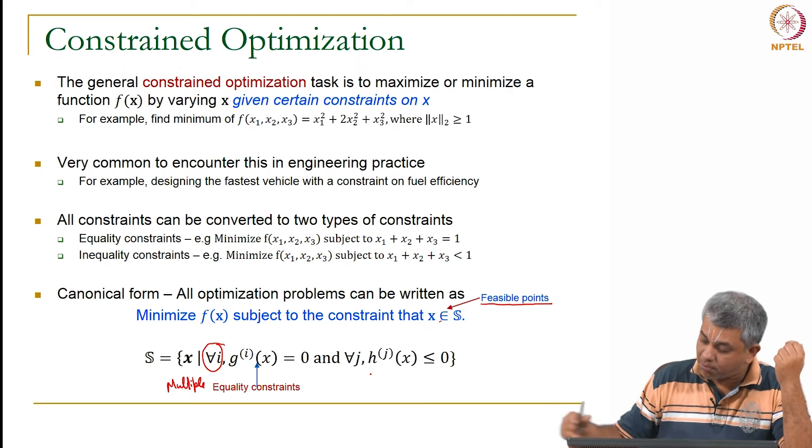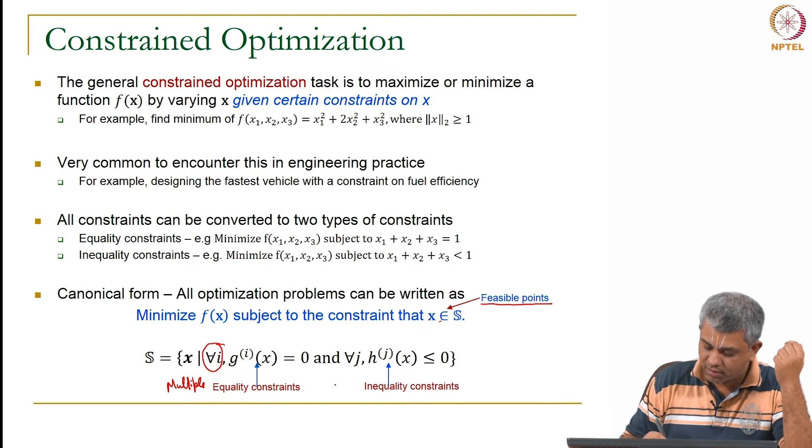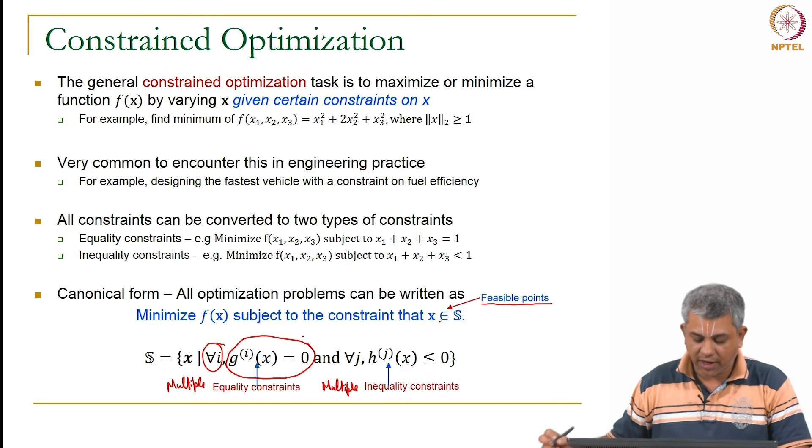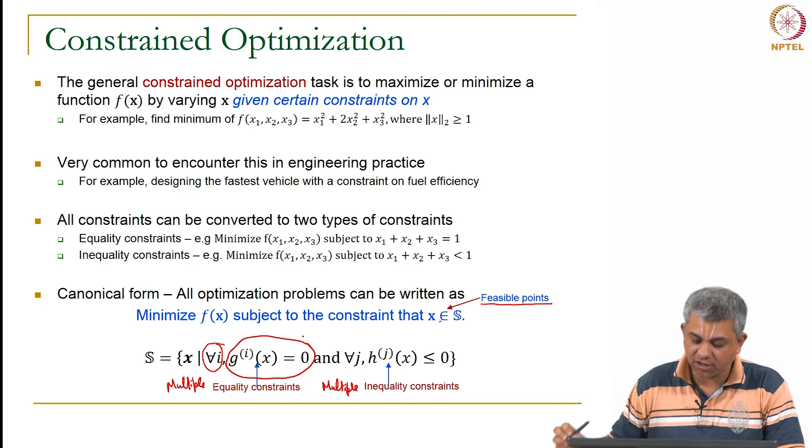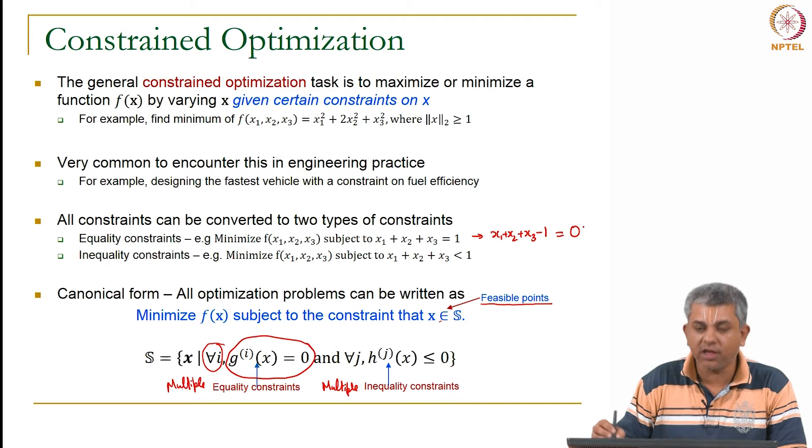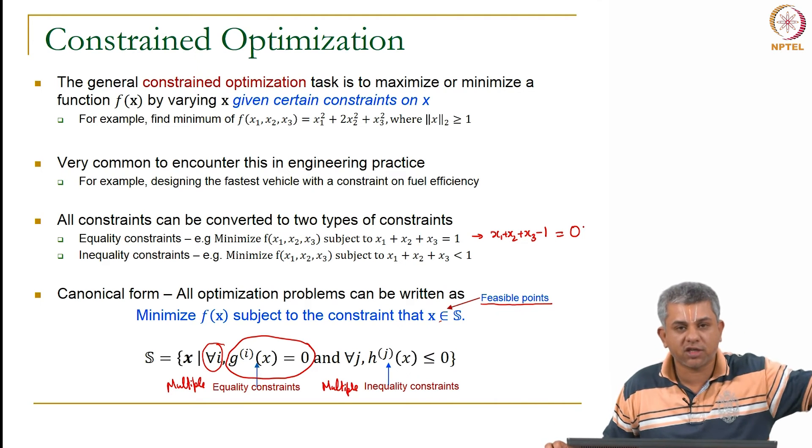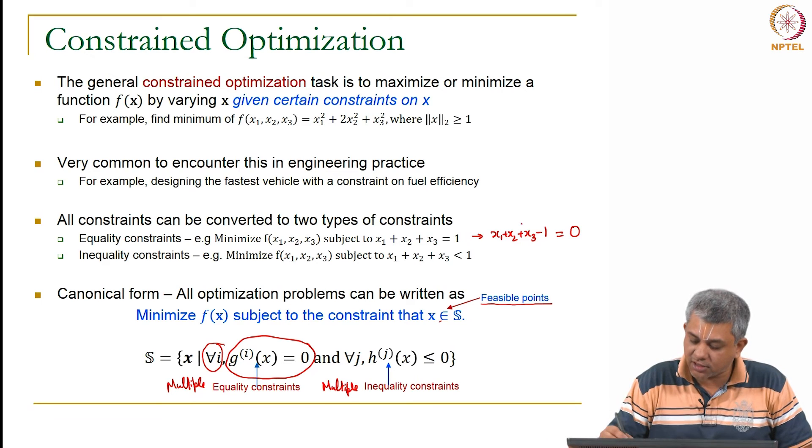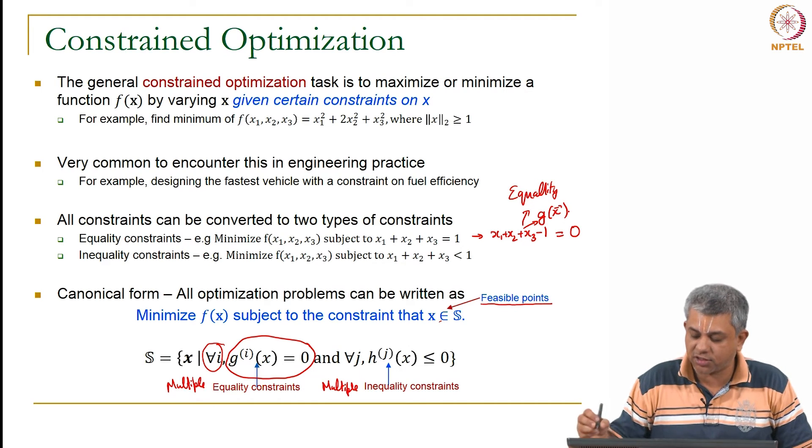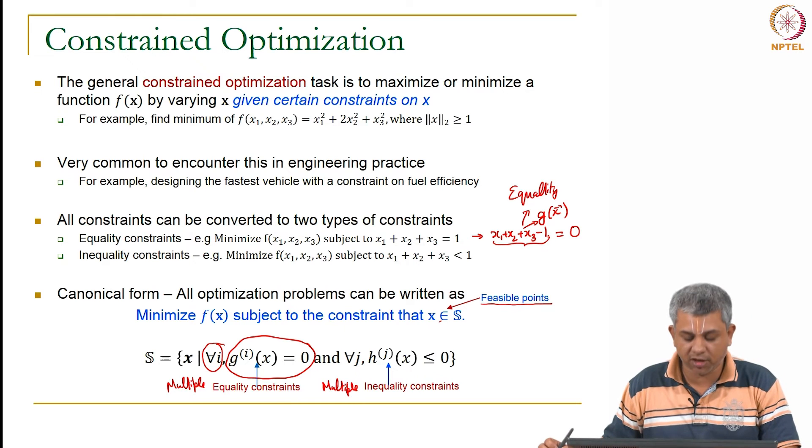You could also have a bunch of inequality constraints. The equality constraints are simply written as gᵢ(x) = 0. For example, this can be rewritten as x₁ + x₂ + x₃ - 1 = 0. So any equation by bringing the constants on one side you can write it as an equality constraint. And now this is your new g(x): g(x) is x₁ + x₂ + x₃ - 1.